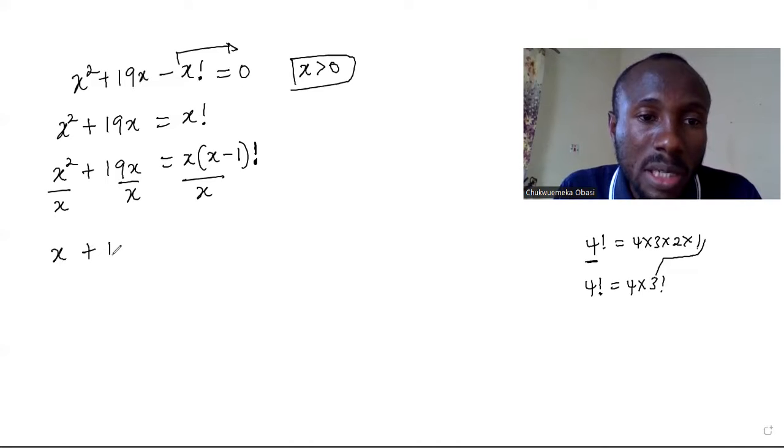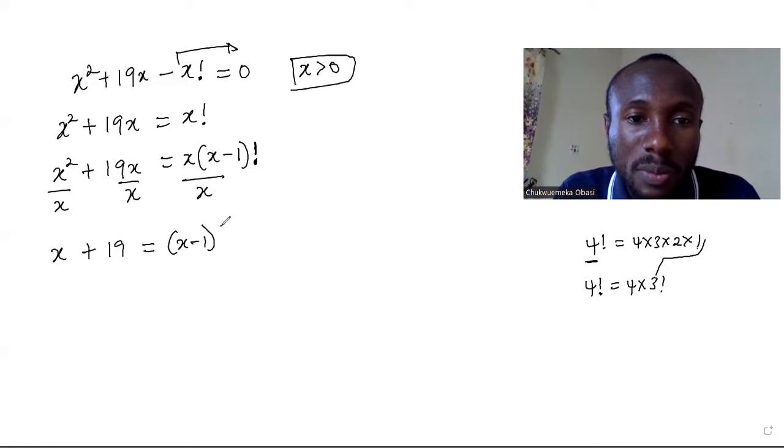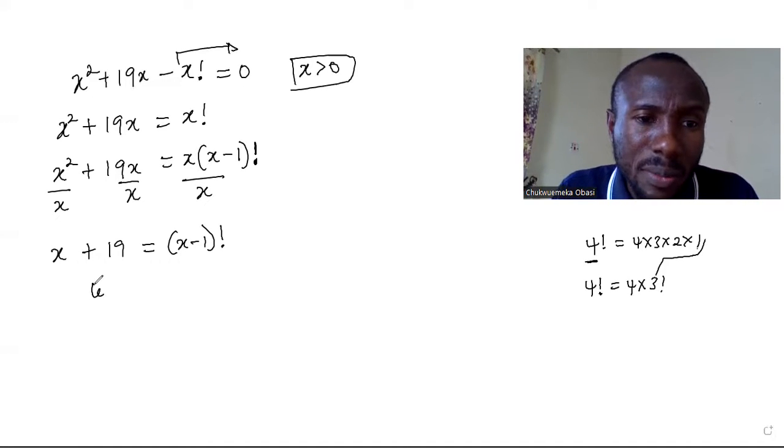So now we have x plus 19 is equal to x minus 1 factorial. Right, now let's let p